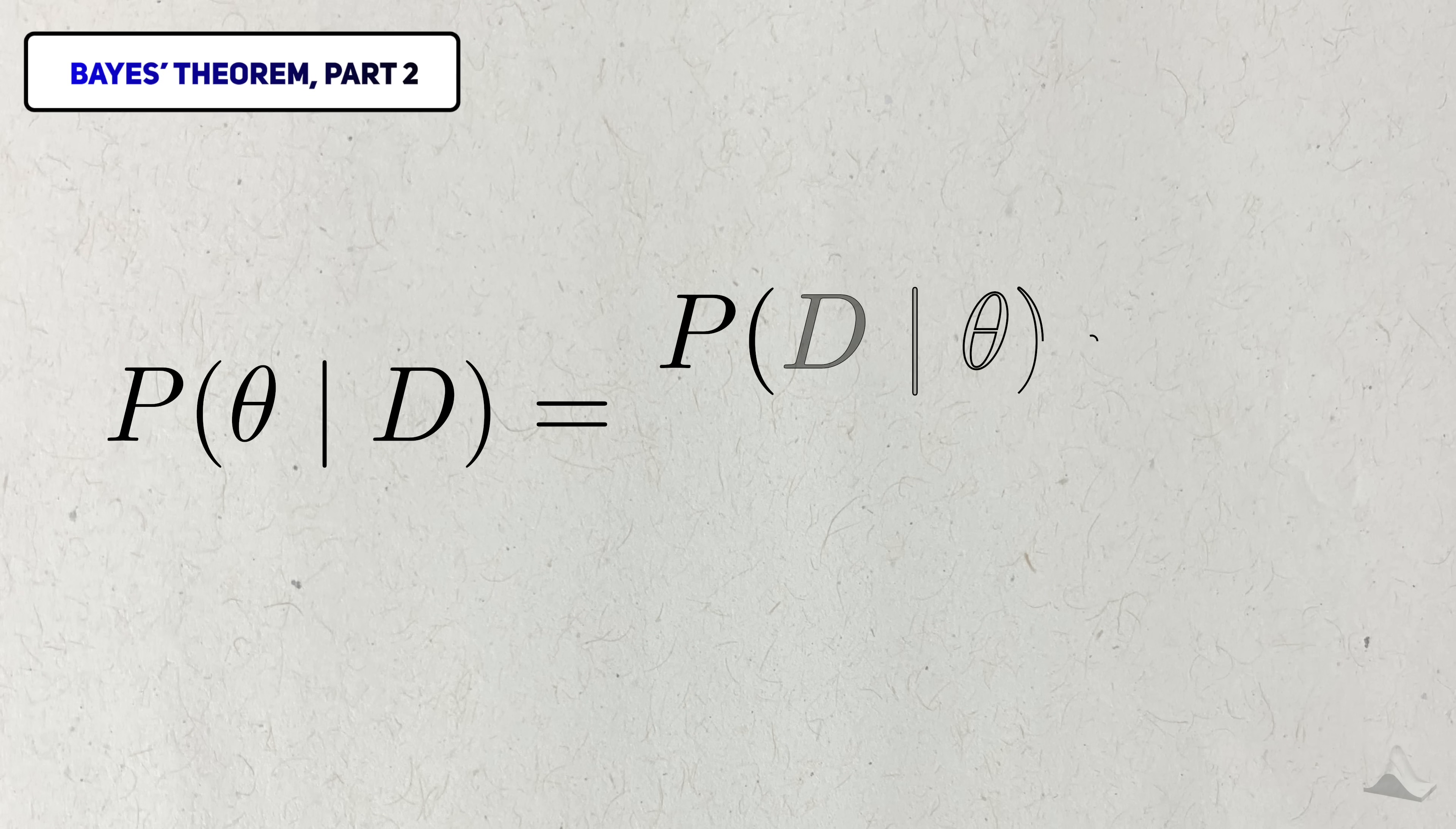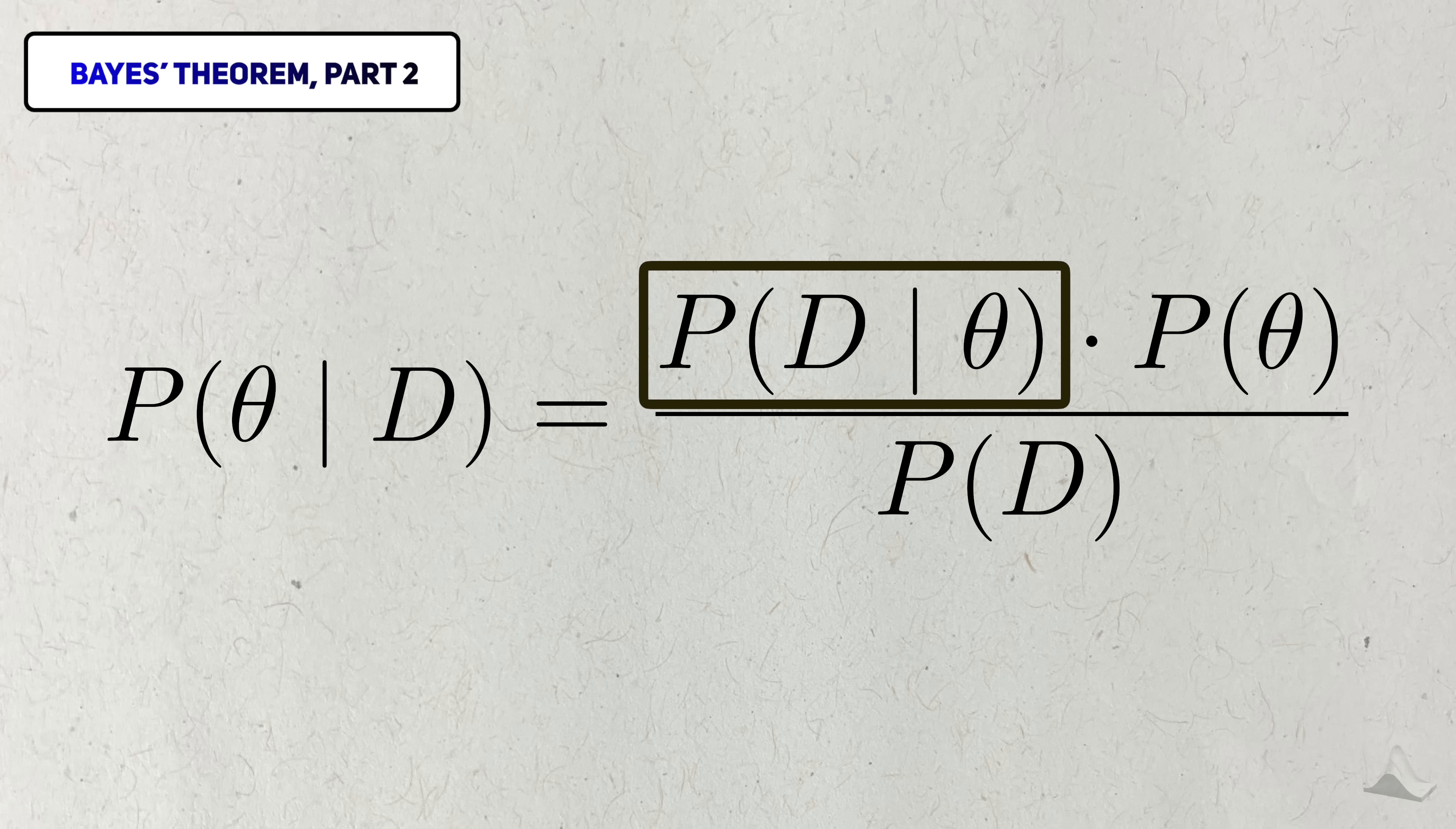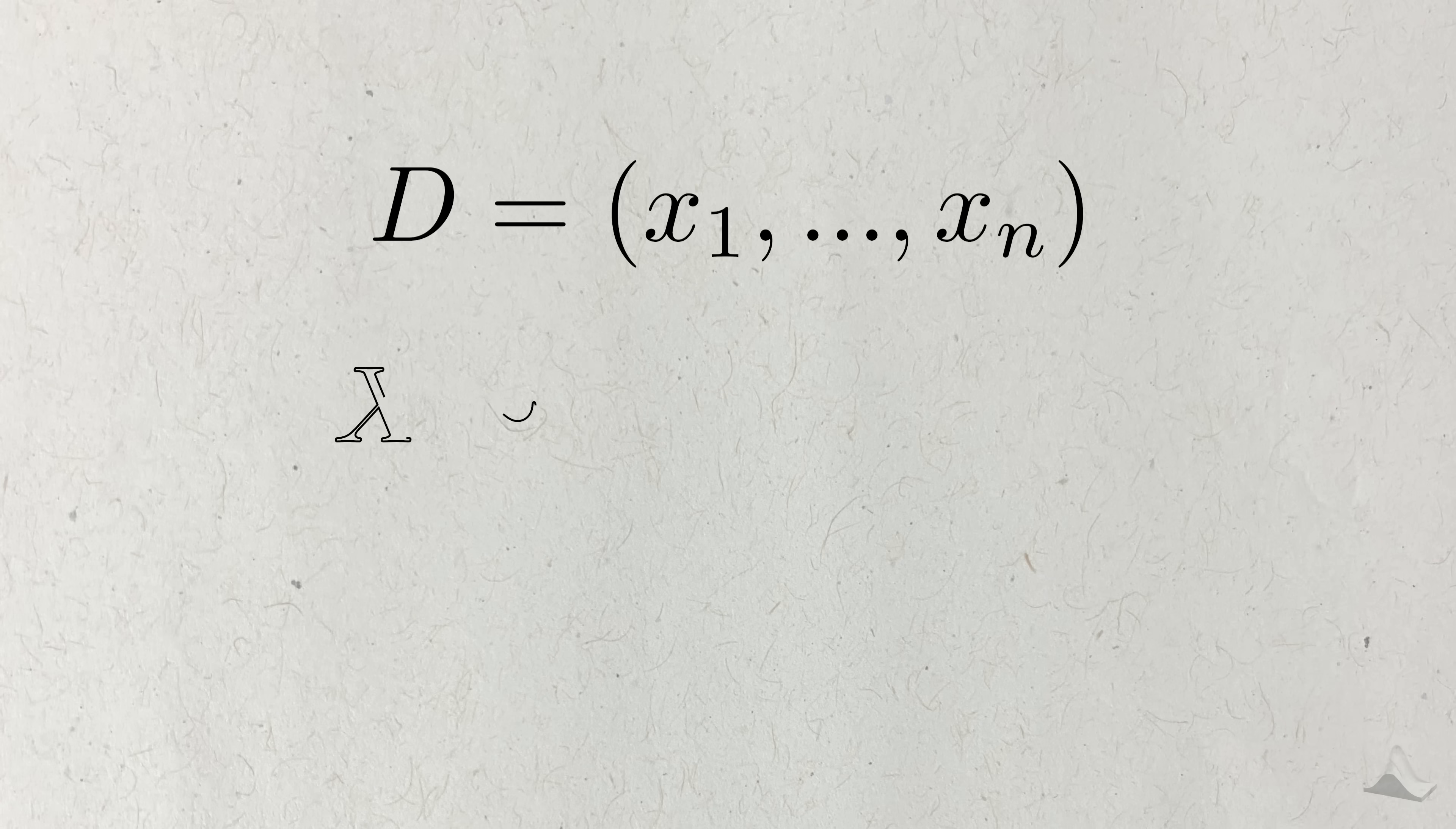On the other hand, frequentist analyses totally ignore the prior probability of any hypothesis. What frequentists focus on exclusively is this term. This conditional probability is what's known as the likelihood. The likelihood is the joint probability distribution of the data, assuming a particular value for the parameter. Remember that we often model the data as coming from its own parametric family.